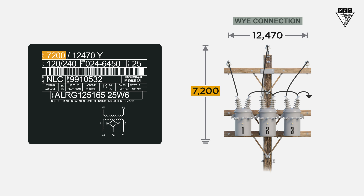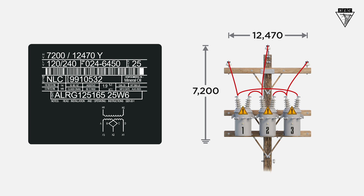A Y connection maintains a phase-to-neutral connection. If we connected these transformers phase-to-phase and tried to feed them with 12,470 volts, we'd break down the insulation and damage the transformers.